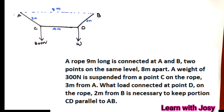A rope 9m long is connected at A and B, two points on the same level 8m apart. A weight of 300N is suspended from point C on the rope, 3m from A. What load connected at point D on the rope, 2m from B, is necessary to keep the portion CD parallel to AB? The total length of the rope is 9m.